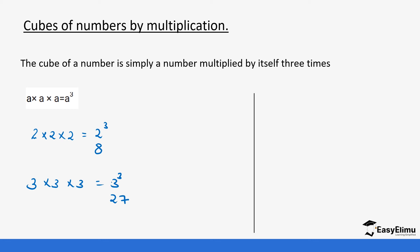For 3³: 3 times 3 is 9, then 9 times 3 gives you 27. For the cube of 4, which is 4 times 4 times 4: 4 times 4 is 16, and 16 times 4 gives you 64.